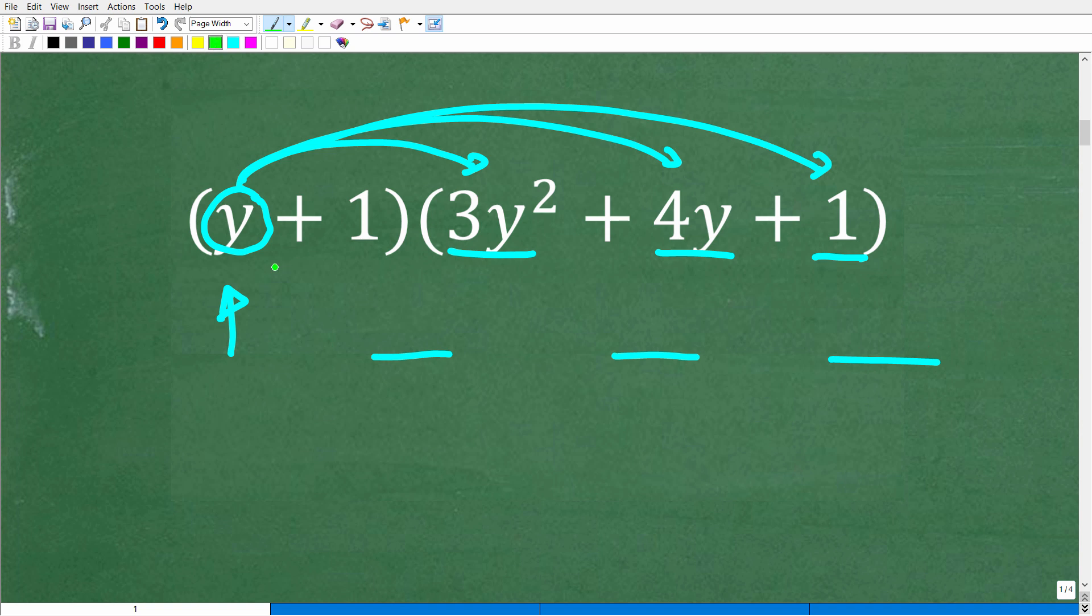All right, now, once you're done with that, you need to shift over to the next term in the polynomial. And in this case, we have a 1. And you're just going to continue this procedure until you are finished. But what we need to do is take this 1 and also use the distributive property. So this is going to be 1 times 3y squared. We'll put that right there. Then 1 times 4y, we'll put that right there. And then 1 times 1, we'll put the answer right there.